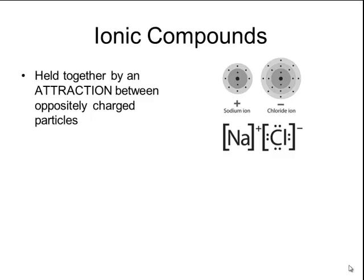Remember that ionic compounds are held together by an attraction between oppositely charged particles. A sodium atom will lose an electron to form a cation with a plus 1 charge, and a chlorine atom will gain an electron to form an anion with a negative 1 charge, and those oppositely charged particles are electrostatically attracted to each other to make an ionic bond.